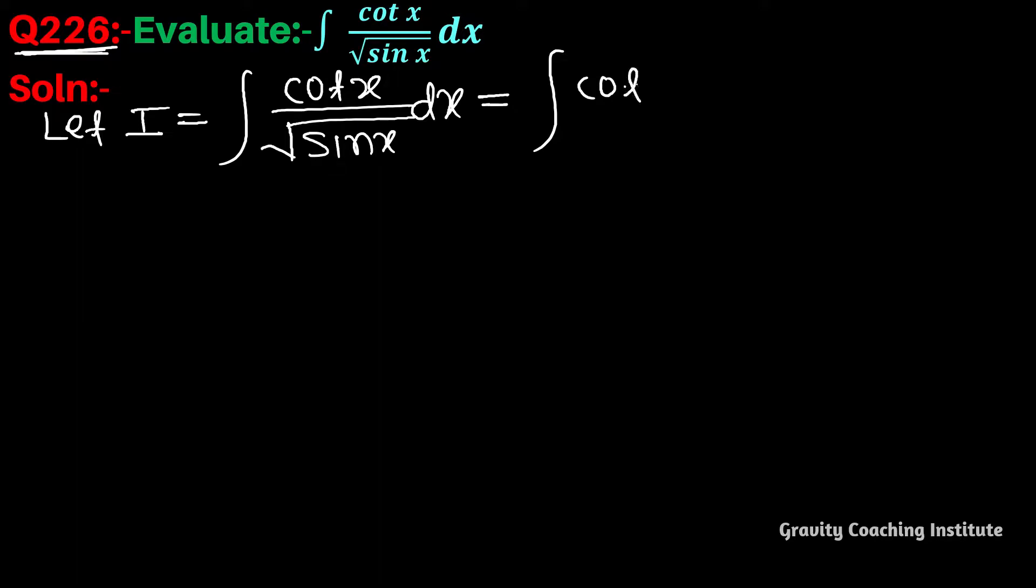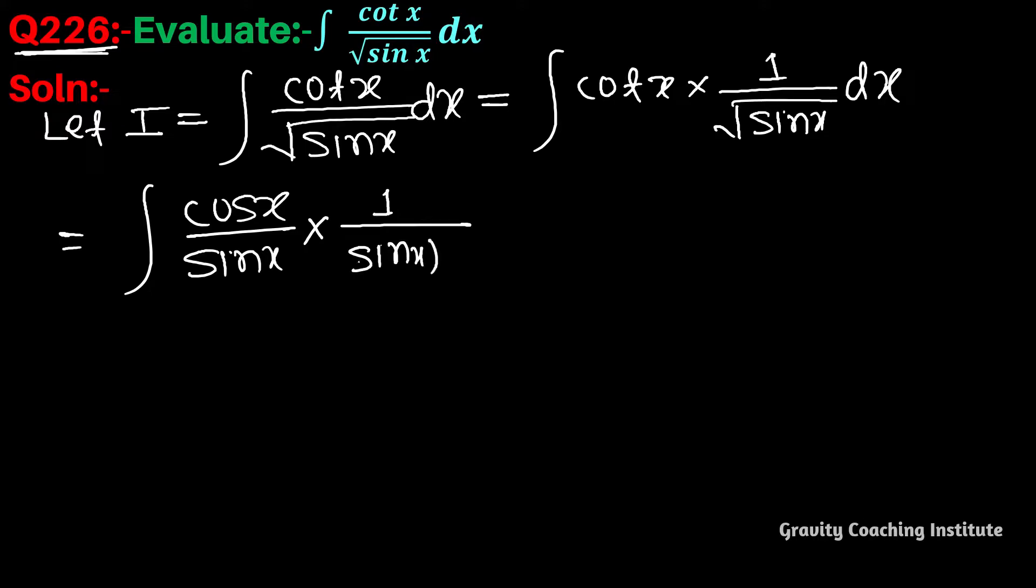There is a cot x into one by under root sine x. cot x का formula होता है cos x by sine x. In one upon, or we can write that sine x to the power one by two dx equal to integration cos x by, और इसके denominator पर multiply करेंगे तो यह होगा sine x की power 3 by 2. और अब हम इसमें अगर sine x को differentiation करेंगे तो यह cos x होगा.